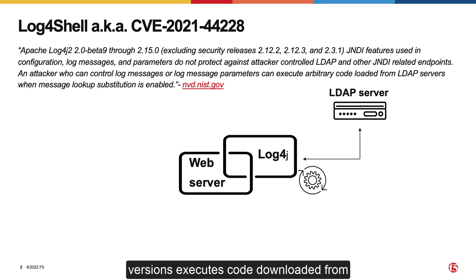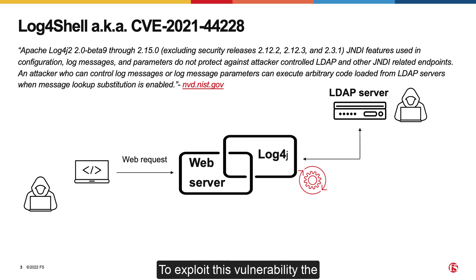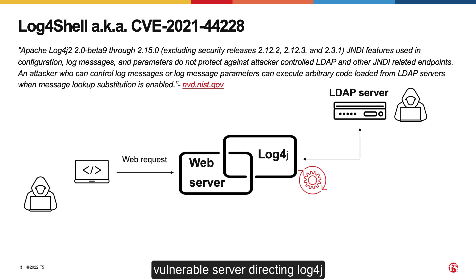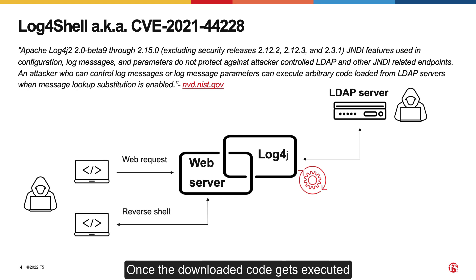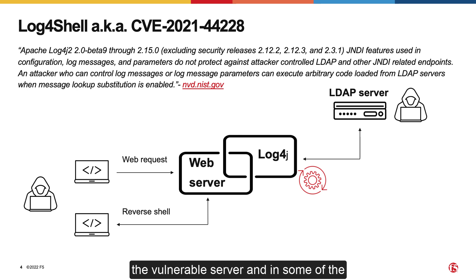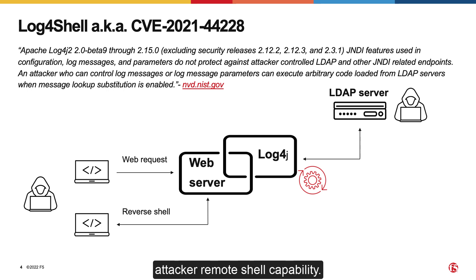that in some versions executes code downloaded from third-party LDAP servers without proper checks. To exploit this vulnerability, the attacker needs to control a rogue LDAP server and then submit a request to the vulnerable server directing the Log4J logging utility to download and execute code from that rogue LDAP server. Once the downloaded code gets executed, the attacker gets near total control of the vulnerable server, and in some of the most dangerous exploits such as Log4Shell, the code instructs the server to open a reverse shell session and attach itself to a socket on the attacker's machine, effectively granting the attacker remote shell capability.